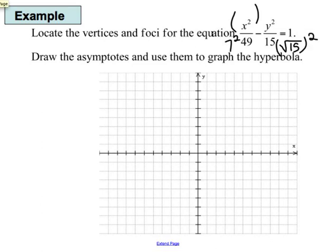15 is not a perfect square, so we're going to think of it as square root of 15 squared, or the value is going to be a little bit smaller than 4. So what this means is we also have a centered around the origin. So we have it's going to go 7 units to the left and to the right of the center.